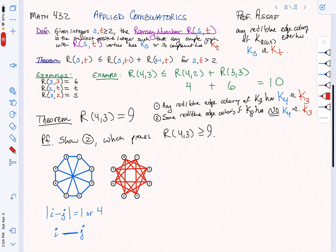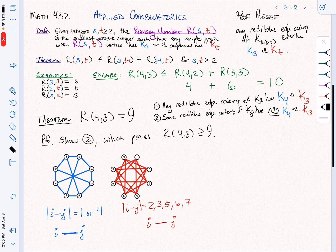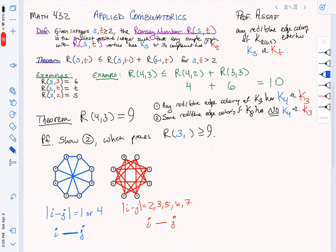So this one is going to be that |i-j|, the absolute value, is going to be anything else. So it could be 2, 3, 5, 6, or 7. Then we're going to get from i to j an edge like this. I've done this example in advance, so let me put the colors the way they actually are going to go for my proof. Luckily, the Ramsey numbers are symmetric. So I'm actually proving that R(3,4) equals 9.